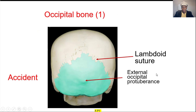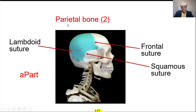This is the temporal bone. Then the occipital — the way to remember this: 'accident, occipital.' You see here the external occipital protuberance, a big bump here. And the lambdoid suture, which is the connection between the occipital bone and the parietal bone. Here you see the parietal — 'apart.'